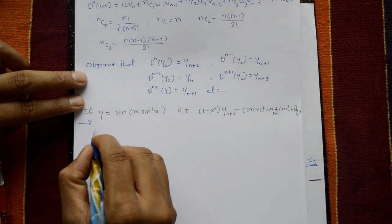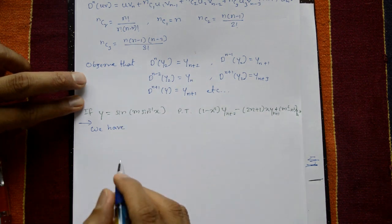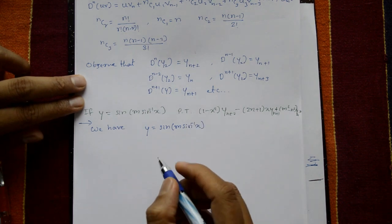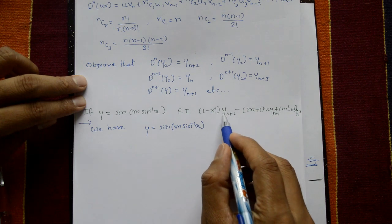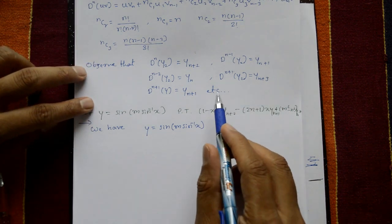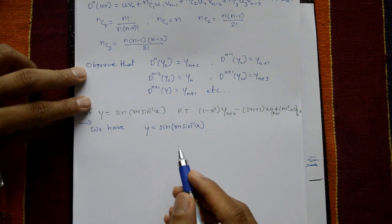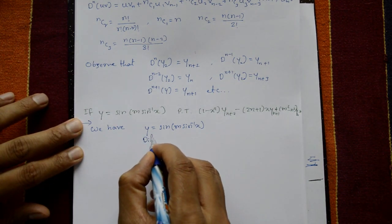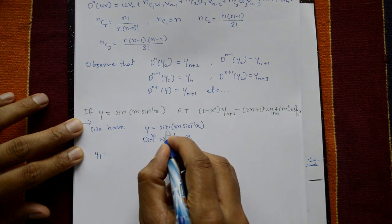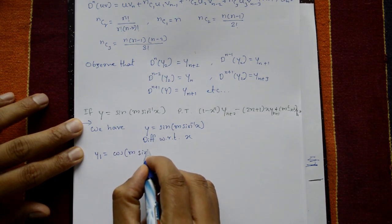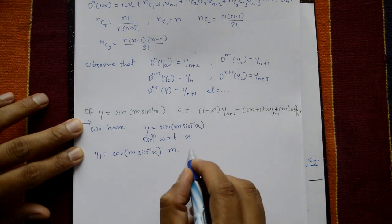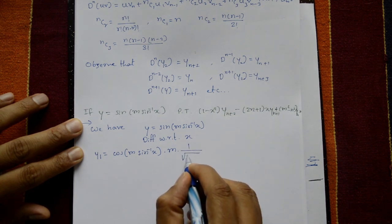Solution: given y equals sin(m·sin⁻¹x). The goal is to prove the expression involving y(n+2), so we differentiate y twice, then apply Leibniz theorem. First differentiation with respect to x gives y1 equals cos(m·sin⁻¹x) times m times (1 over square root of 1 minus x²), using the standard formula for the derivative of sin⁻¹x.